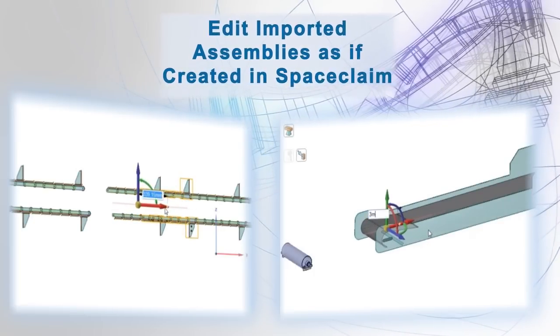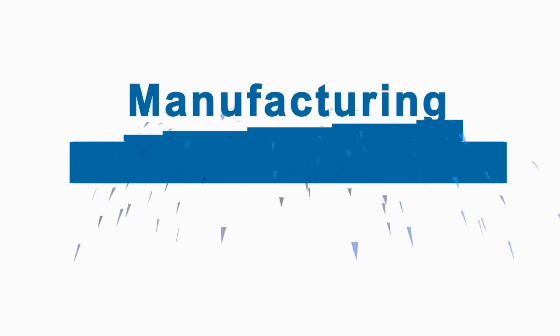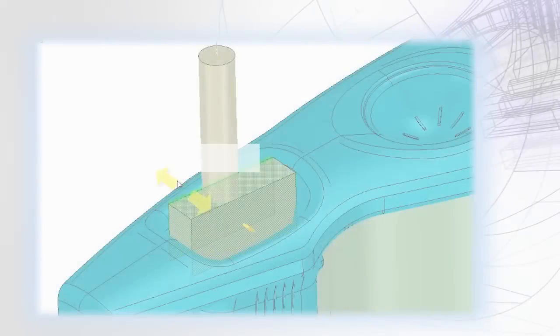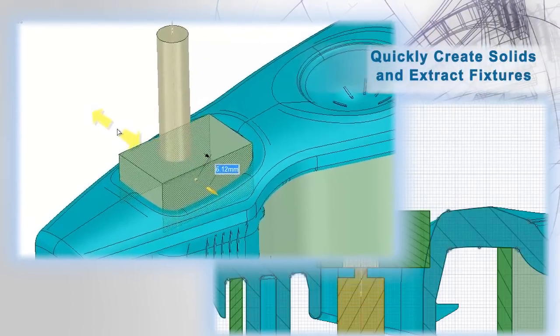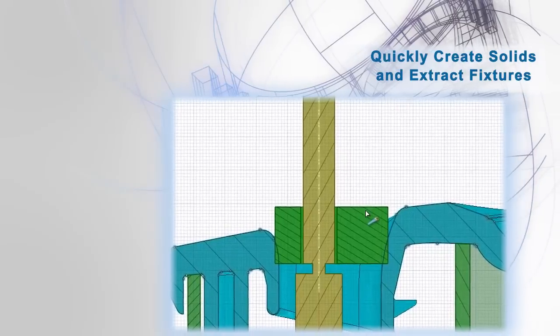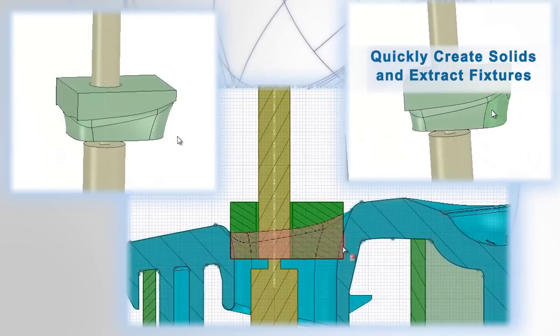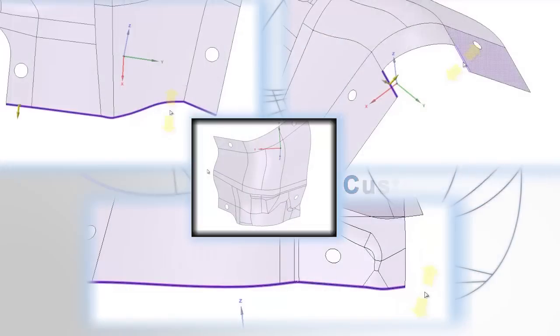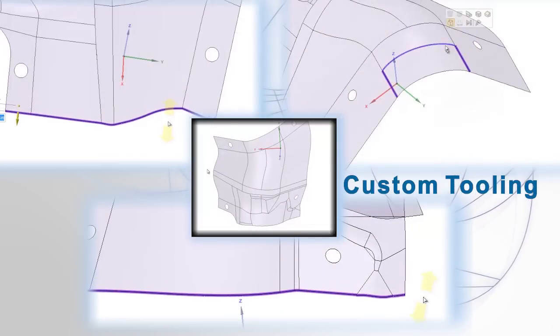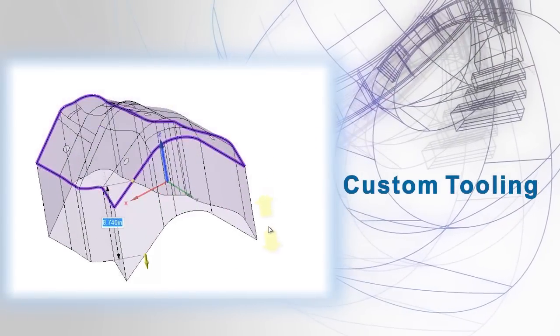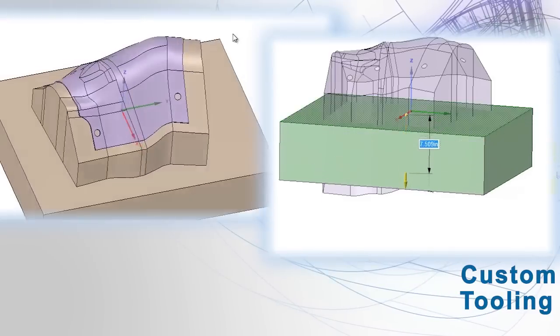SpaceClaim is now letting users model the way they think. For manufacturing engineers or machinists, the goal is to cut parts and not spend time in CAD. That's why SpaceClaim has streamlined workflows for creation of tooling, fixtures, and process plans. The direct modeling capabilities also mean rapid creation of electrodes and molding dies.